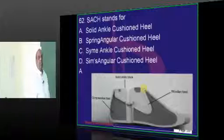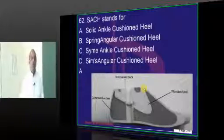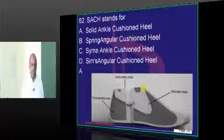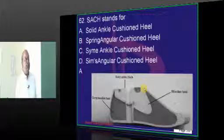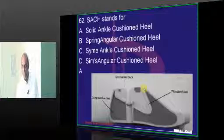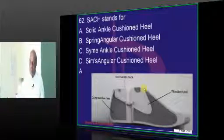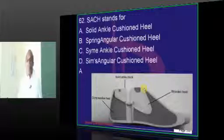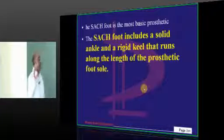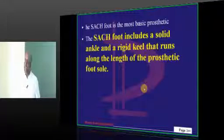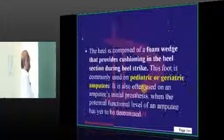Why is this question asked? Recently there was an Olympic runner who was an amputee, ran on a prosthetic, then shot his girlfriend and is now in prison — Pretorius. So SAC is used for amputee prosthetics; you need to provide a cushion at the ankle, so for that we use a basic prosthetic.